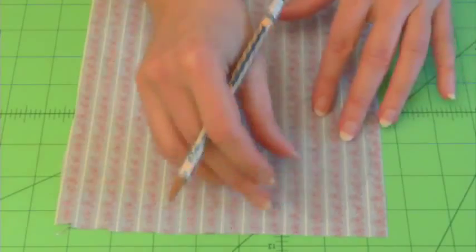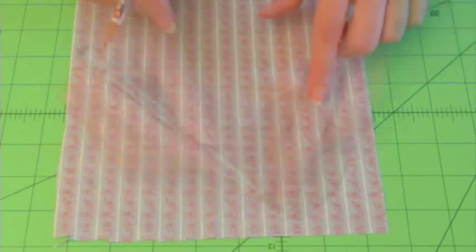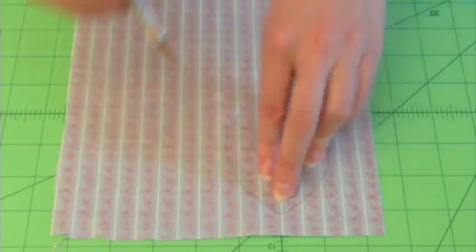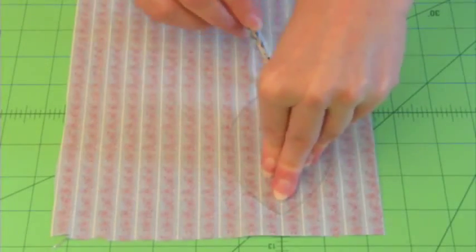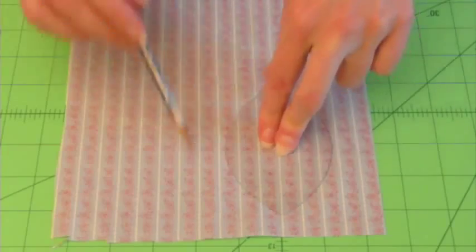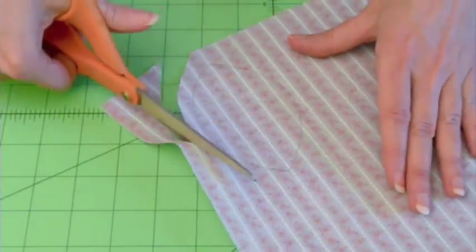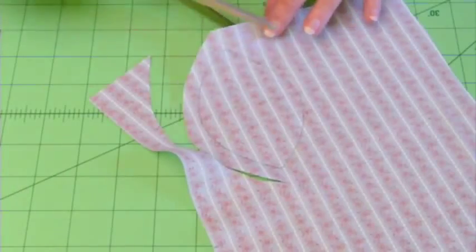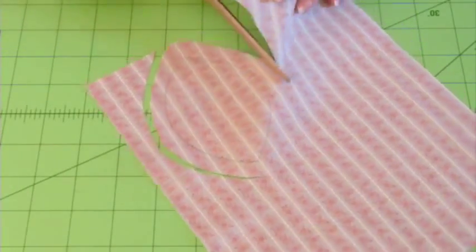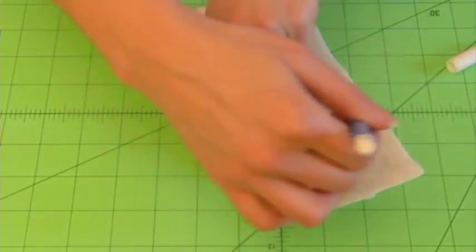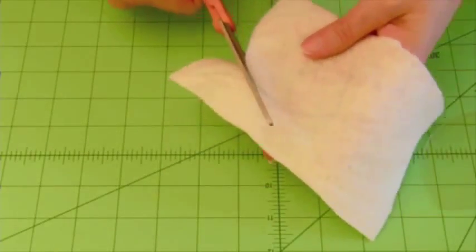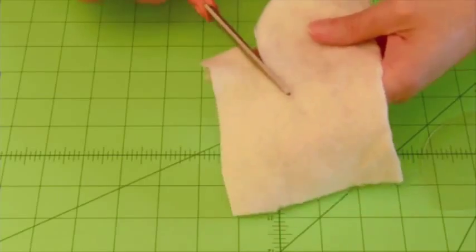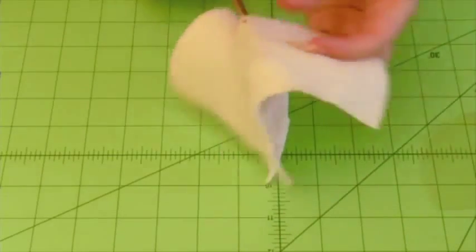Now, your first step will be to take your fabric and trace one of your clamshell template pieces on the back of it with either a pencil or a water soluble marker. The main thing to know is to leave enough room around your trace line so that you can add about a half inch of seam allowance. Then, using the very same template, you'll trace that onto your piece of batting. You'll actually cut that out right along your traced outline.